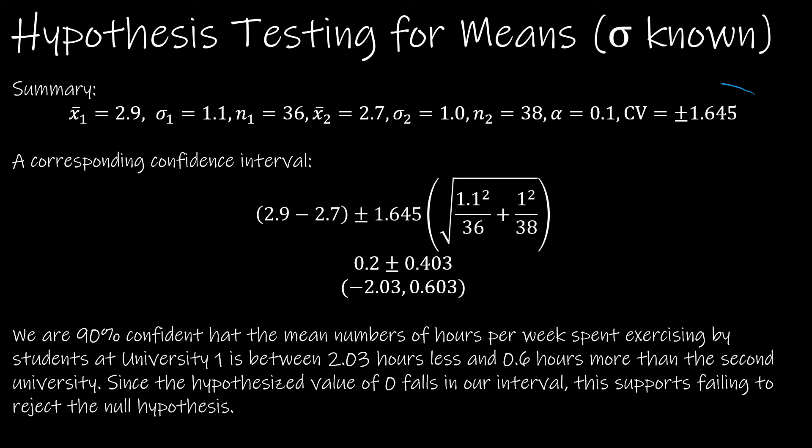The confidence interval is found using the critical value. And so we already have the 1.645. Remember, this is just x̄₁ minus x̄₂. We do not include a hypothesized difference. In this case, it wouldn't matter, but in our last example, it should have mattered. And then we end up with 0.2 plus or minus 0.403. And notice we end up with zero in our interval.